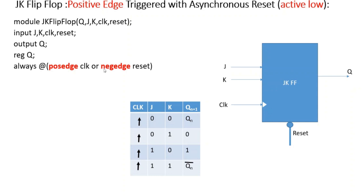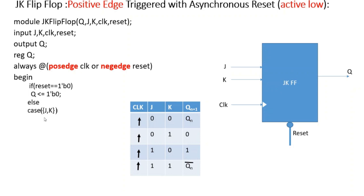If the reset signal is synchronous then we don't have to put it in the sensitivity list. Remember: if the reset signal is asynchronous, put it in the sensitivity list; if it is synchronous, remove it. Then we want that if the reset signal is low, the output should be equal to 0. If the reset signal is high then it should work like an ordinary flip-flop, and we are realizing that part using an else clause with a case structure.